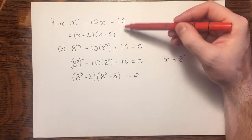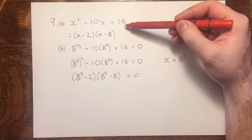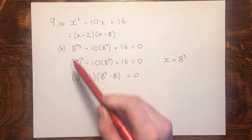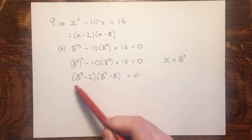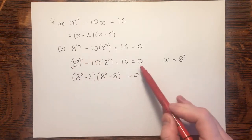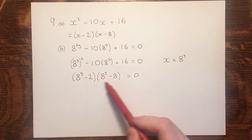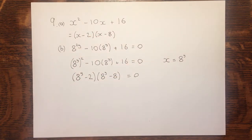I've used the factorization from part A in part B, but instead of it being x's, it's 8 to the power y's. But that's valid, because these 8 to the power y's are in the same position as these x's, and these 8 to the power y's are in the same position as these x's.